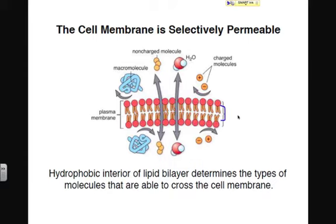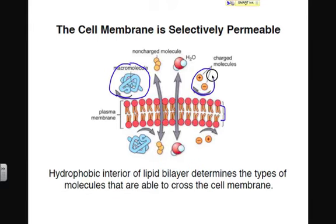In general, polar molecules cannot cross the membrane, while nonpolar molecules will be able to cross the membrane readily. Large polar molecules like proteins, nucleic acids, and carbohydrates will not be able to cross the membrane by themselves. Ions also won't be able to cross the membrane because they cannot interact with the nonpolar interior of the cell membrane.